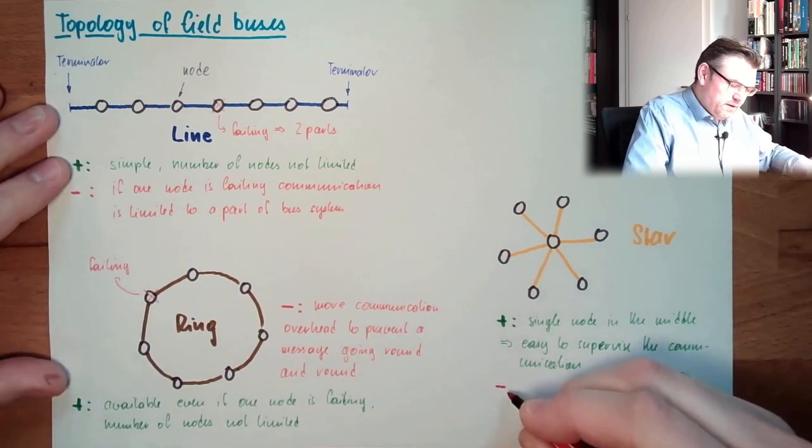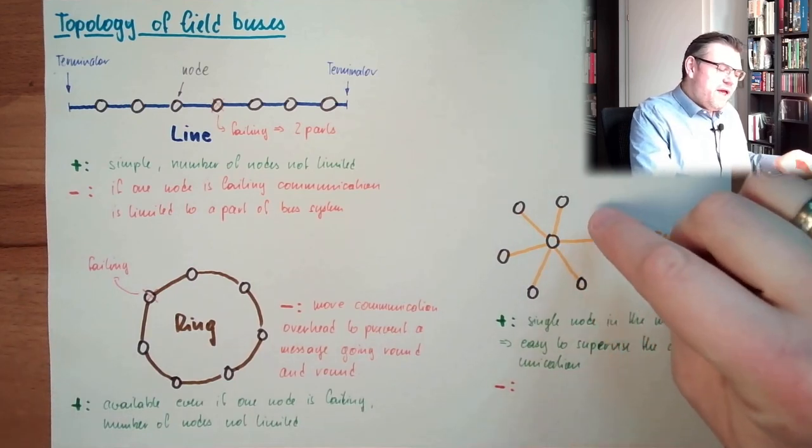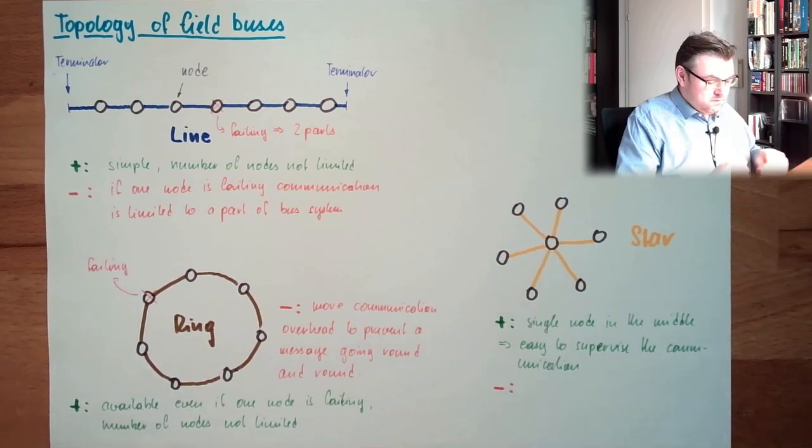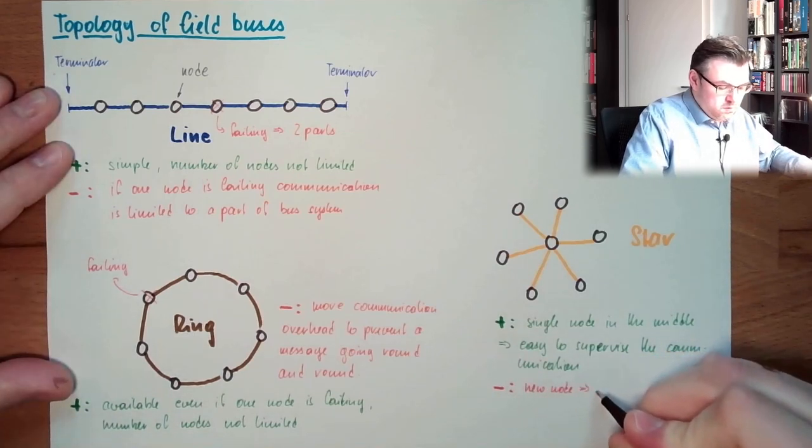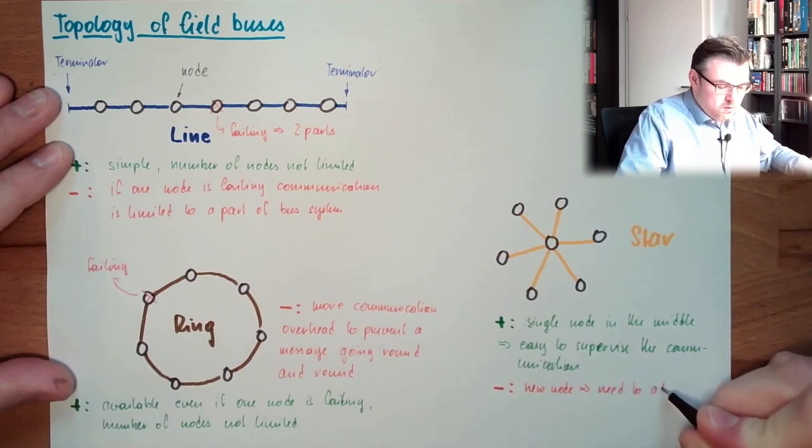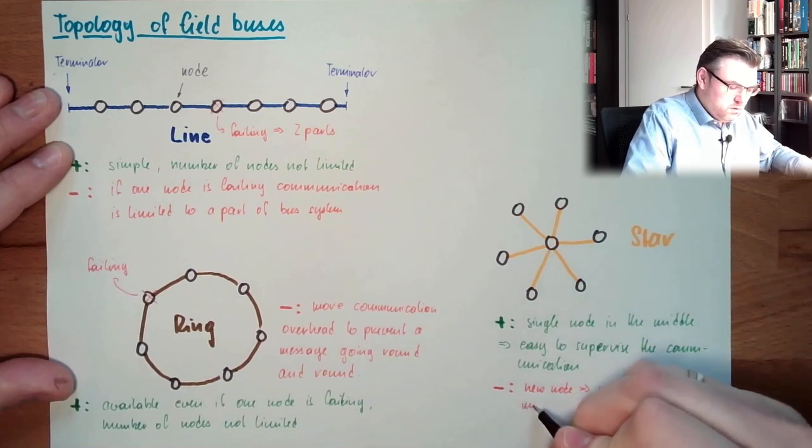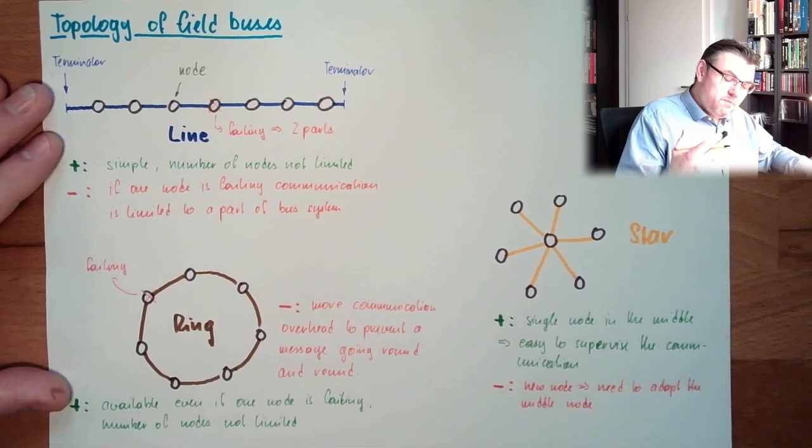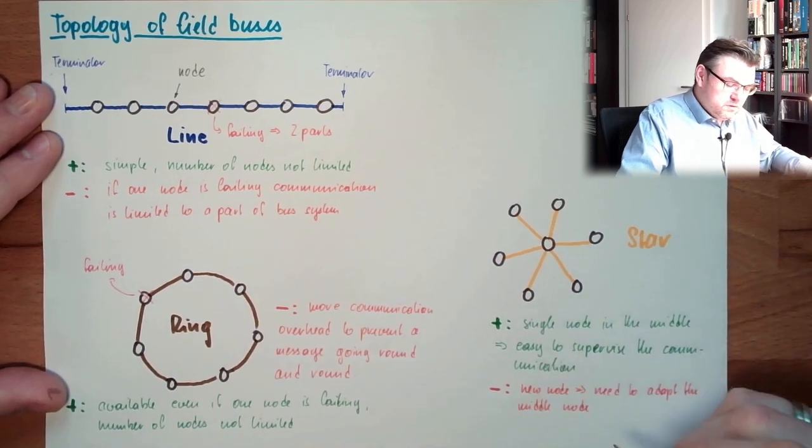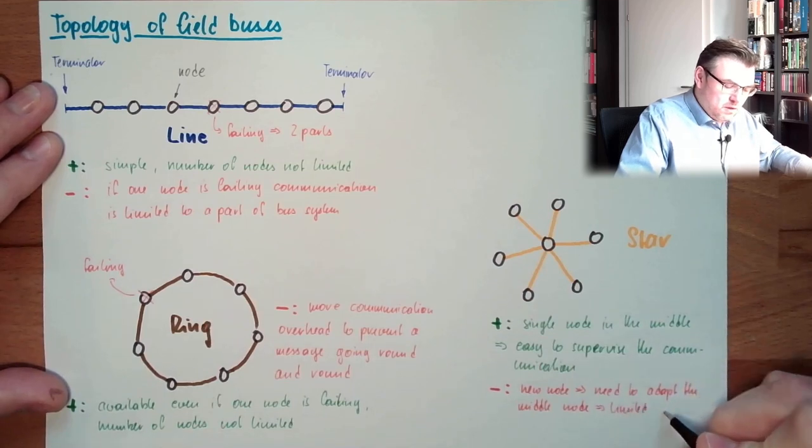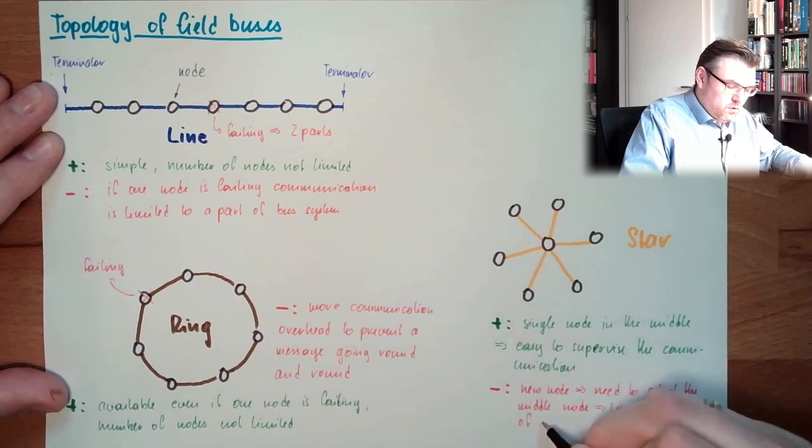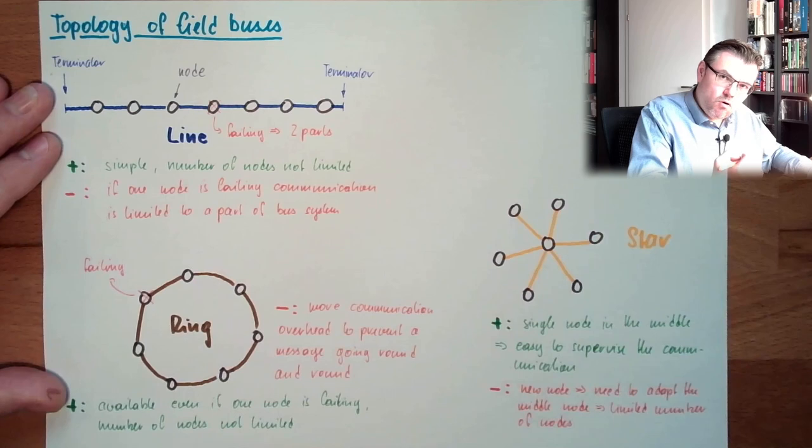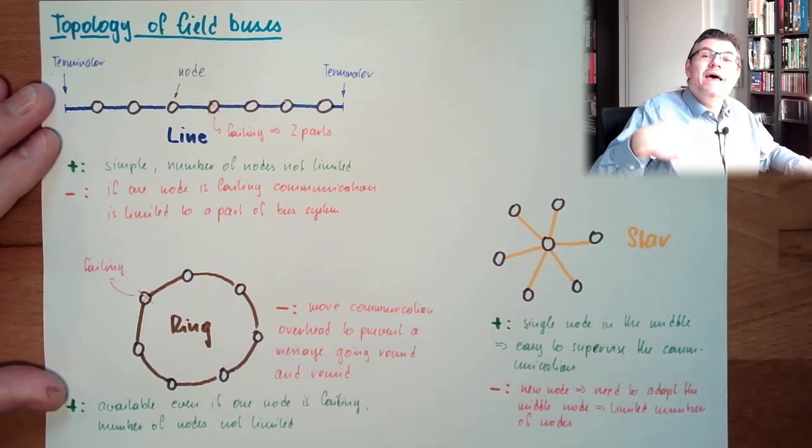What is the downside? Scalability. The downside is scalability, because whenever I add a new node, I have to adapt the middle node. So, the middle node is limiting somehow, with its capabilities, the number of nodes. Limited number of nodes. Because this has to handle the whole communication. So, this has to be a big, strong node. And even the biggest and strongest node has a limit. That's it.